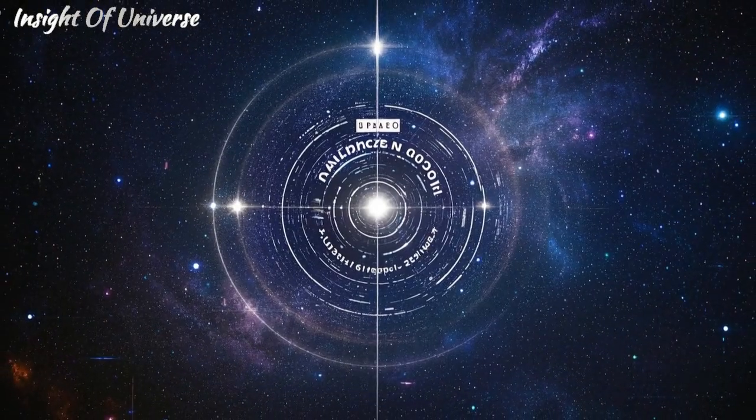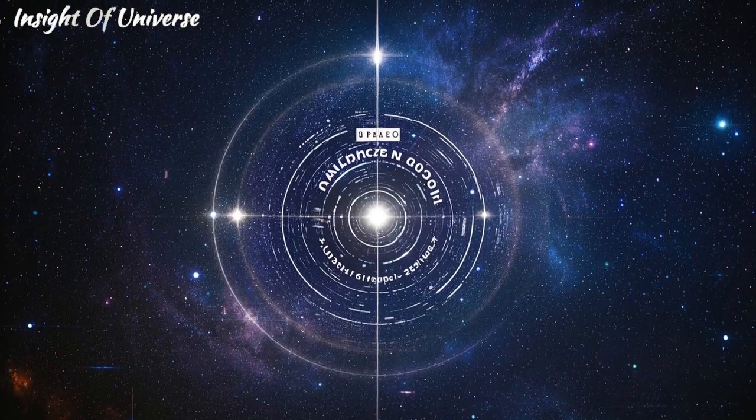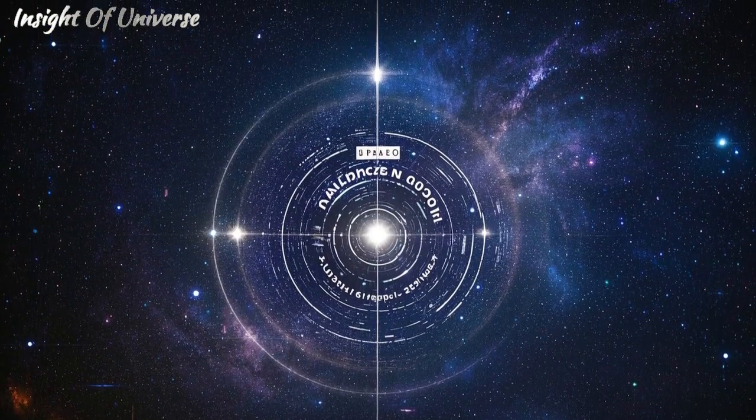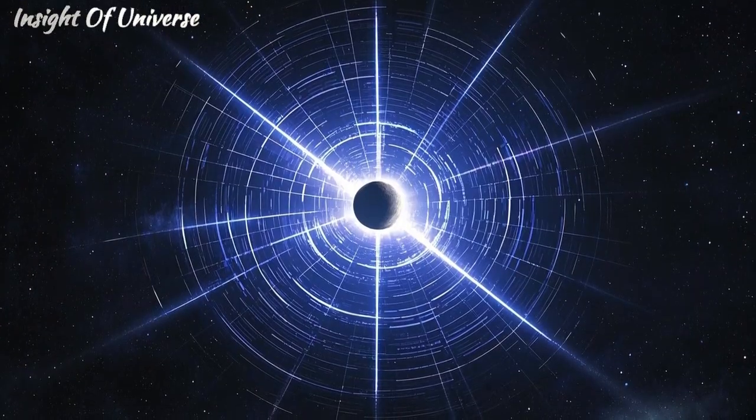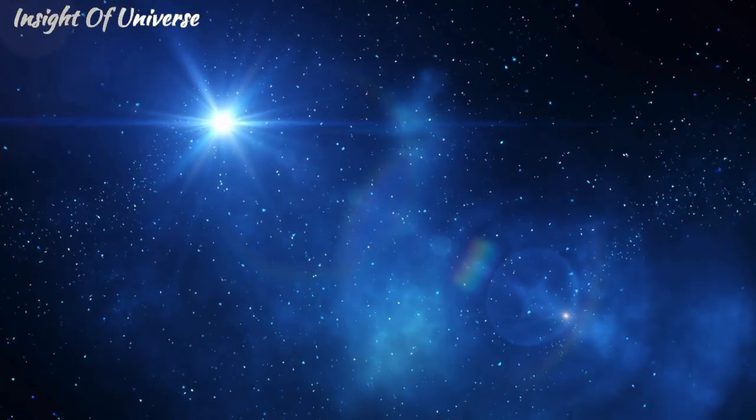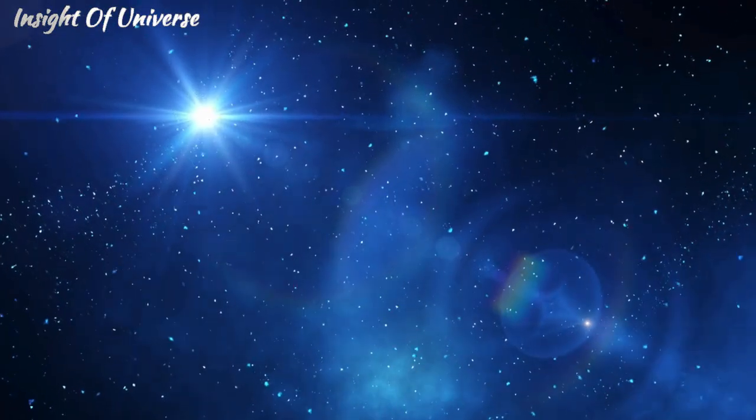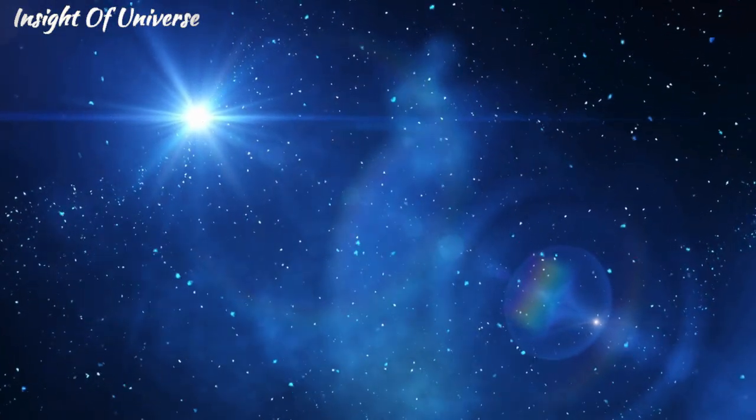The pulsar PSR J1748-2446AD, for example, is a true record holder. It spins so fast that if it were in the Moon's place, you could see its radiation pulses flickering like a cosmic strobe light, 716 times per second.